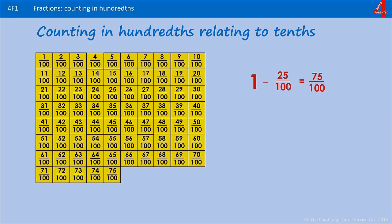If you're up for a challenge, have a go at breaking that 25 hundredths down into how many tenths and how many hundredths. In 25 hundredths, there were two whole rows of 10, so that's two tenths, and then we had some hundredths left over — so as well as taking away two tenths, we took away another five hundredths.